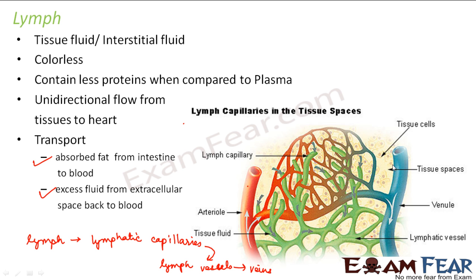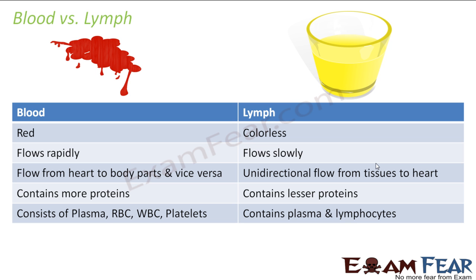The tissue cells are visible here, and the spaces between the tissue cells are known as tissue spaces — it is in these tissue spaces that the lymph flows. This completes our discussion of the circulatory system in humans, as well as the circulatory system in other animals like reptiles, amphibians, and fishes. Before we go ahead, let us quickly look at the differences between blood and lymph.